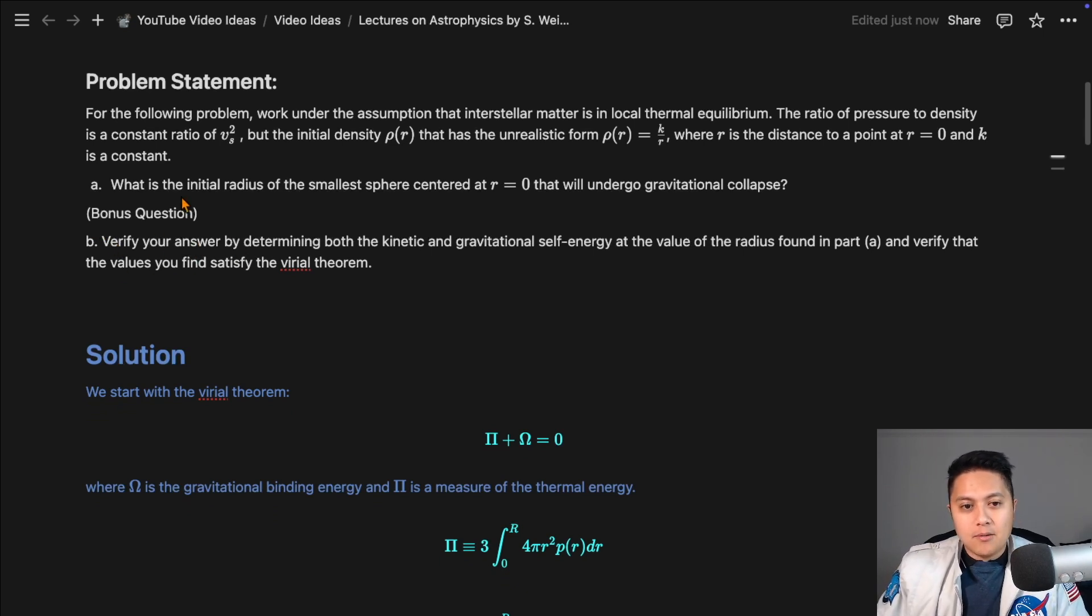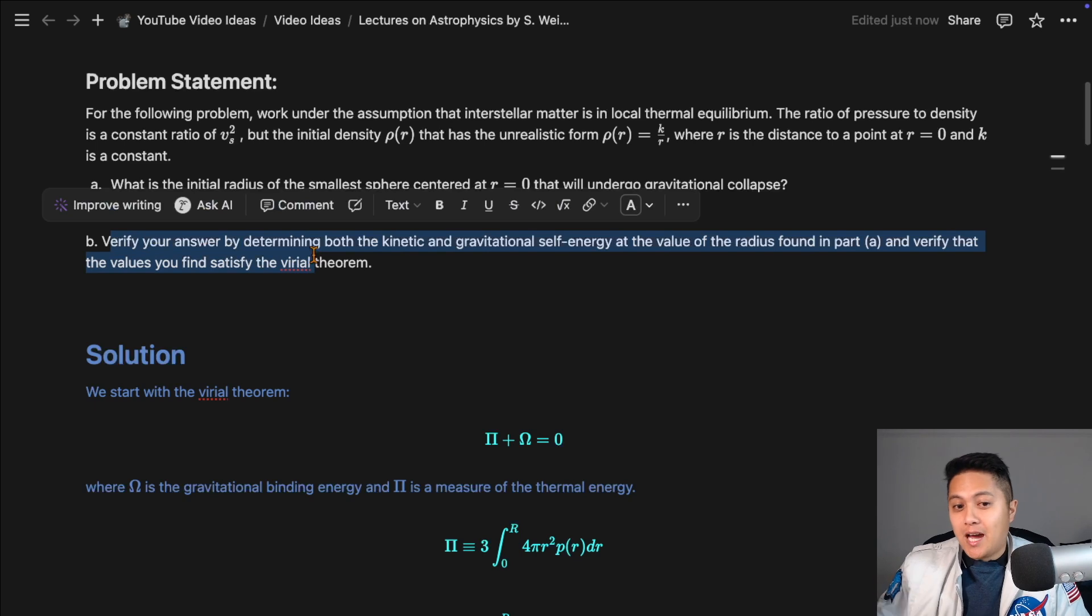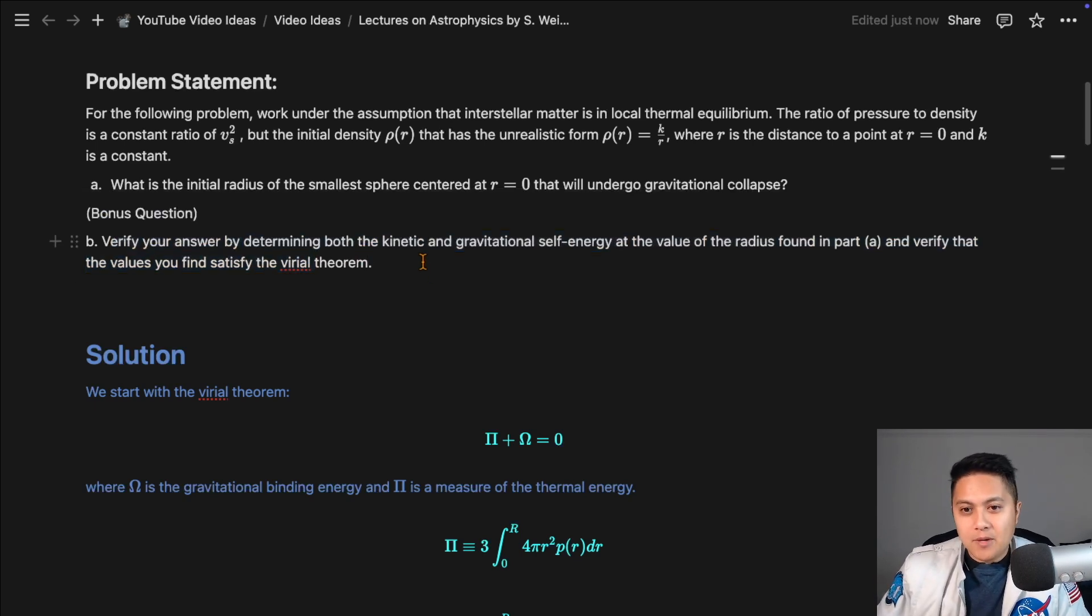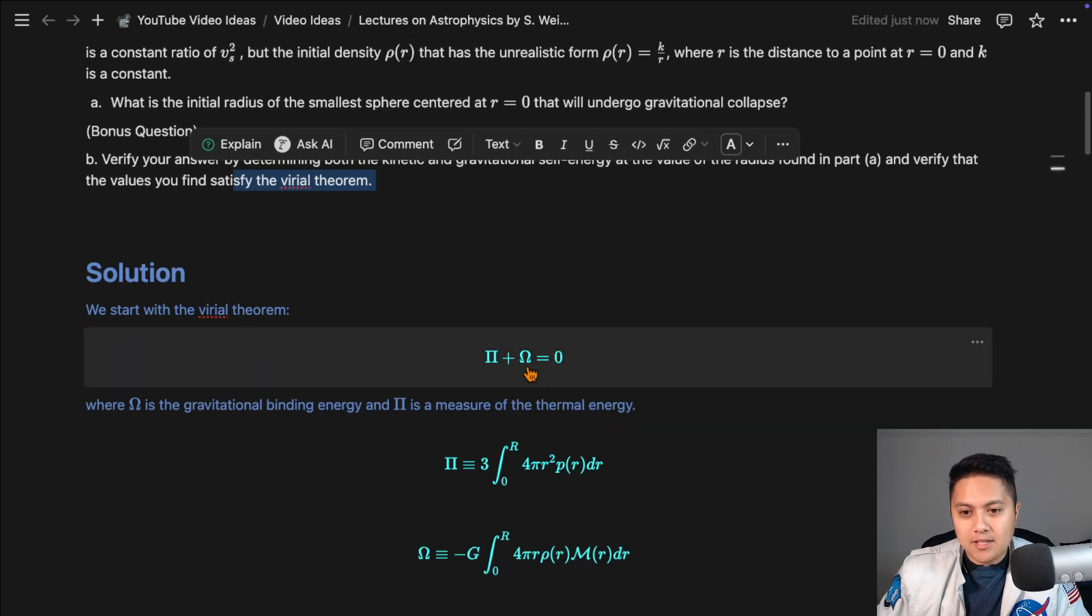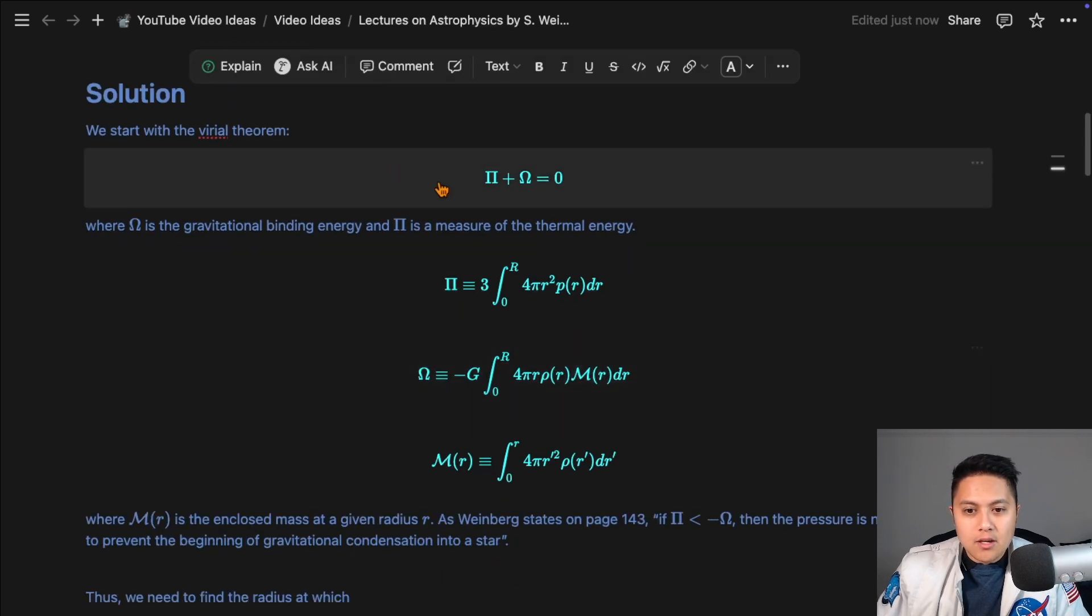And as a bonus question, I wanted the AI models to effectively determine the kinetic and gravitational self energy to make sure that it indeed satisfies the virial theorem, which is how you solve this problem. I wanted to ask them this question because that's actually how I verified myself to make sure my answer to part A was correct, because if your answer to part A is correct, then you should have this equation here satisfied that relates the gravitational self binding energy and the thermal energy.